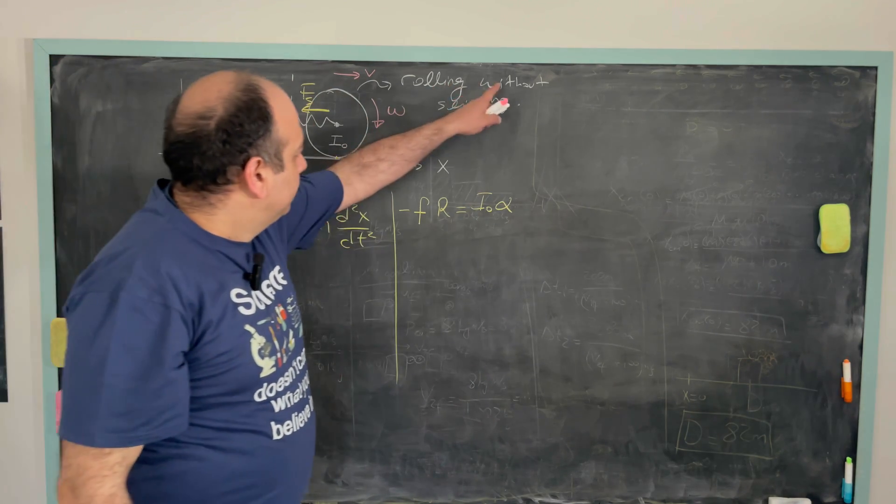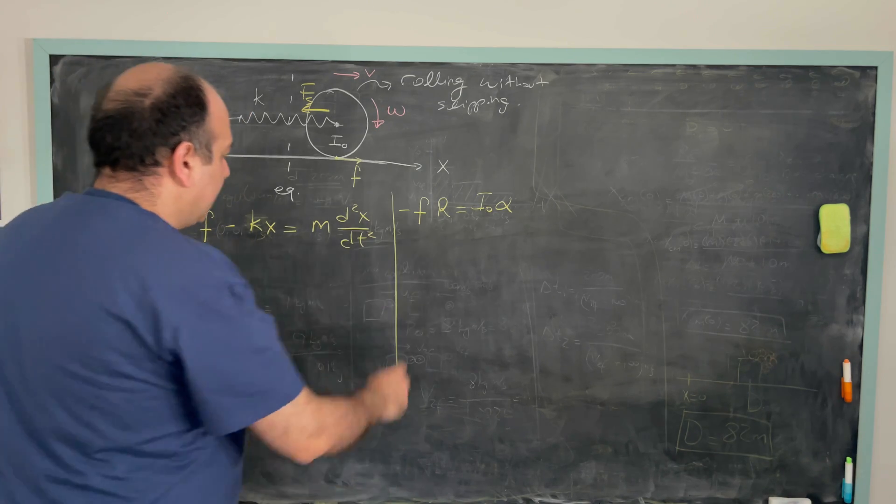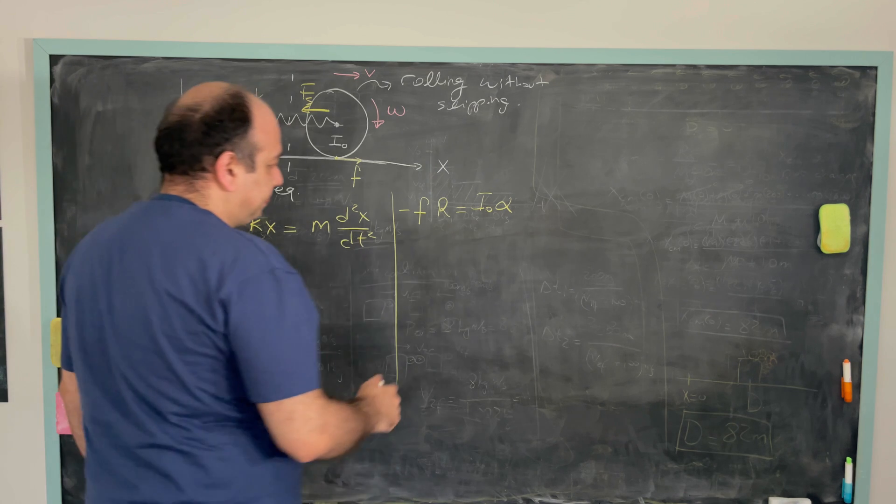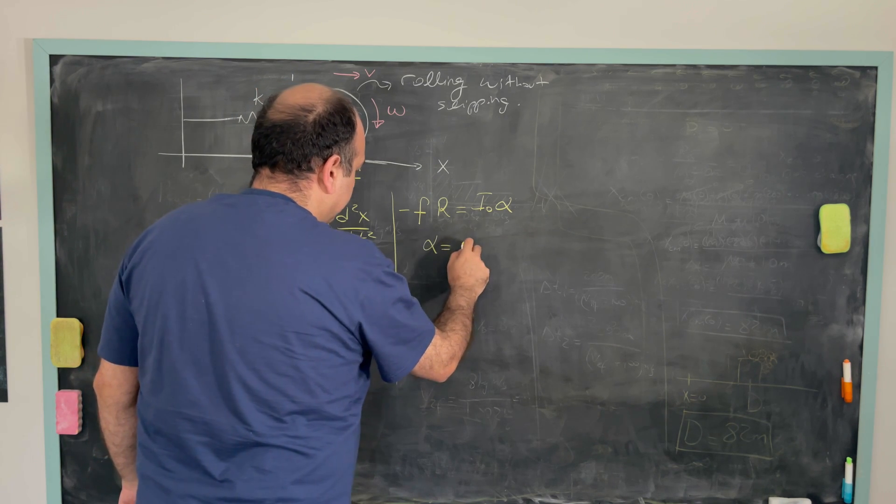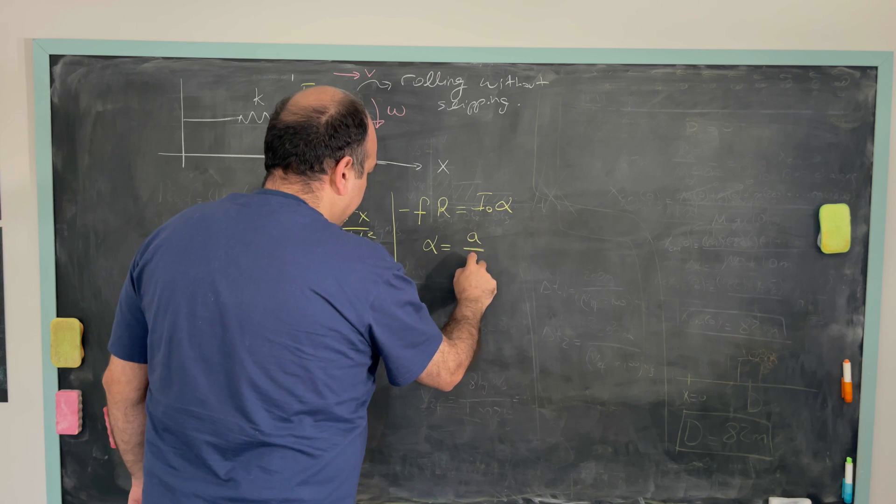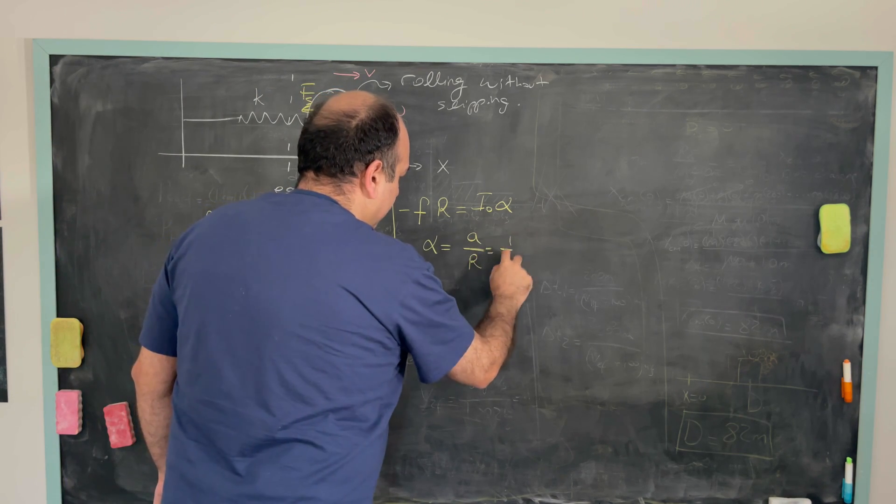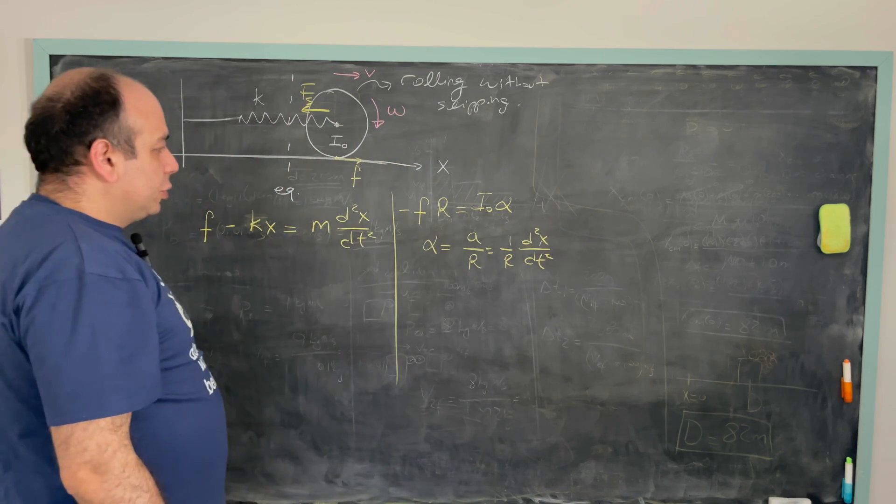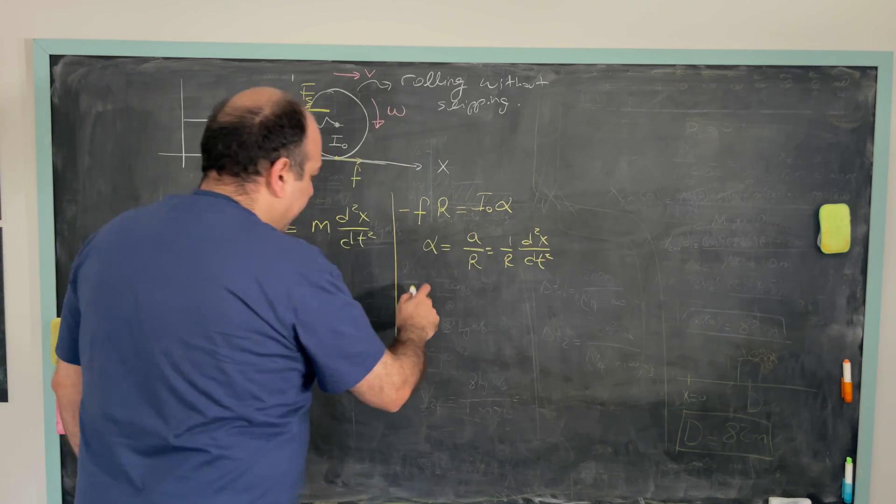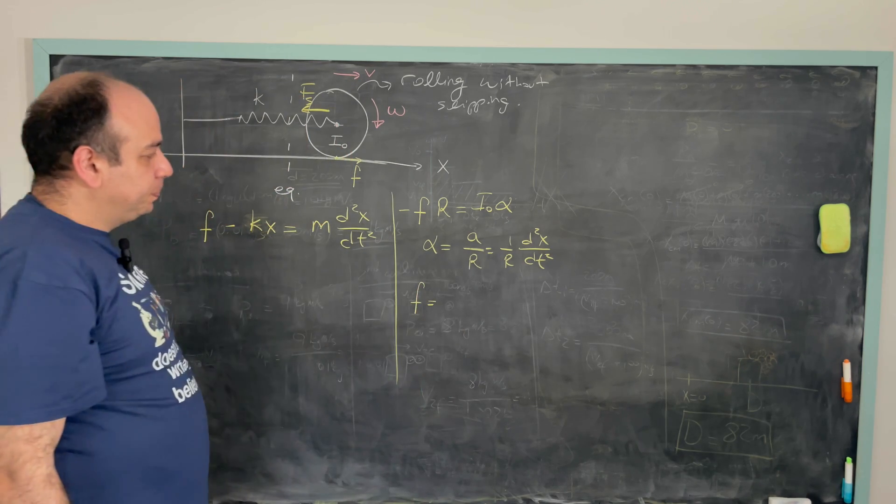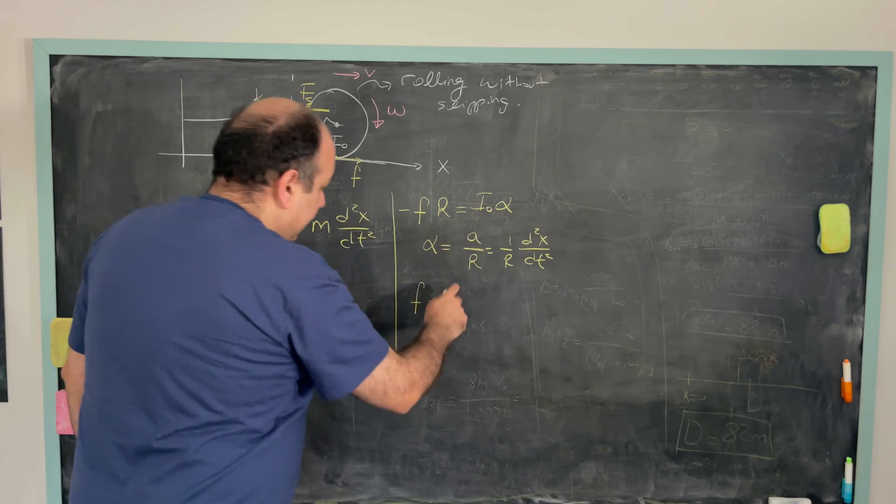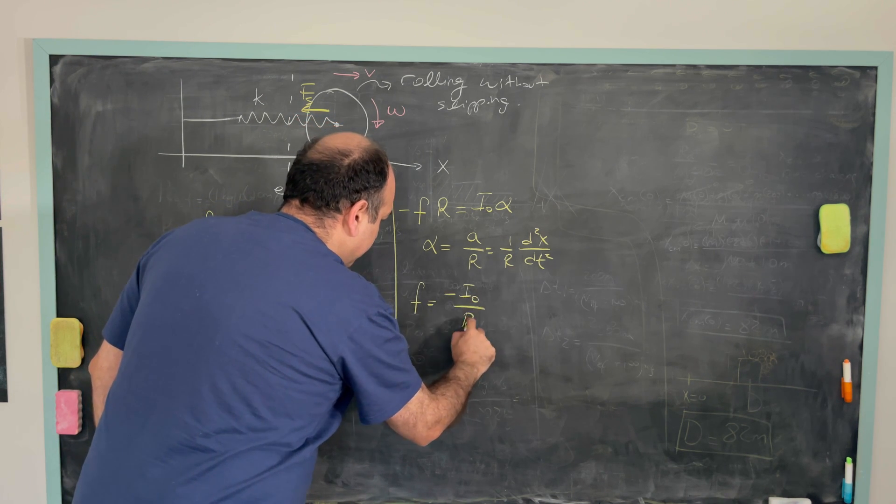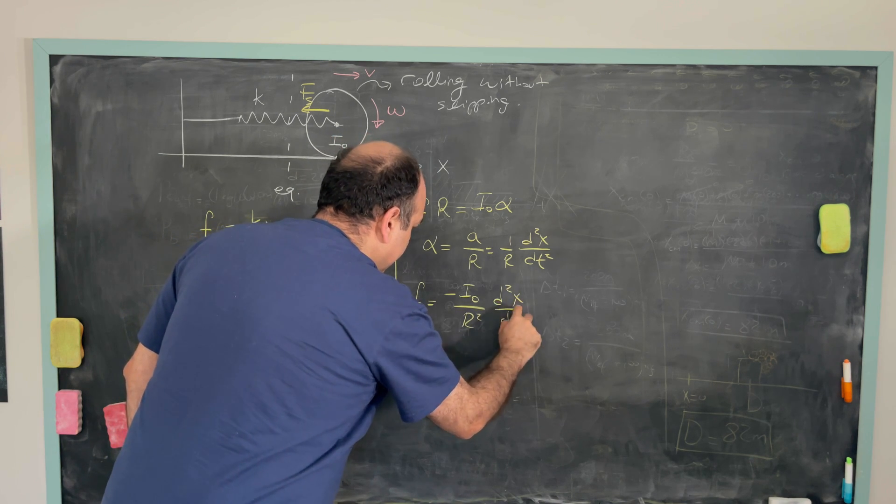Since this is a rolling motion without slipping, I know that this alpha is related to this acceleration. So how are they related? Alpha is equal to A over r. Or this is equal to 1 over r d square x over dt square. So using this, I can actually solve for F. So F is equal to minus I0 over r square d square x over dt square.